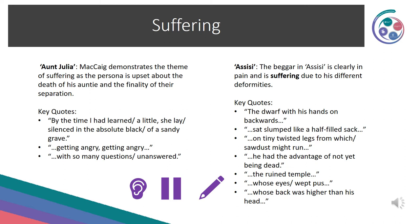In Assisi, the beggar is clearly in pain and suffering due to his deformities. Key quotes: 'The dwarf with his hands on backwards', 'Sat slumped like a half-filled sack', 'On tiny twisted legs from which sawdust might run', 'He had the advantage of not yet being dead', 'The ruined temple', 'Whose eyes wept pus', and 'whose back was higher than his head.'